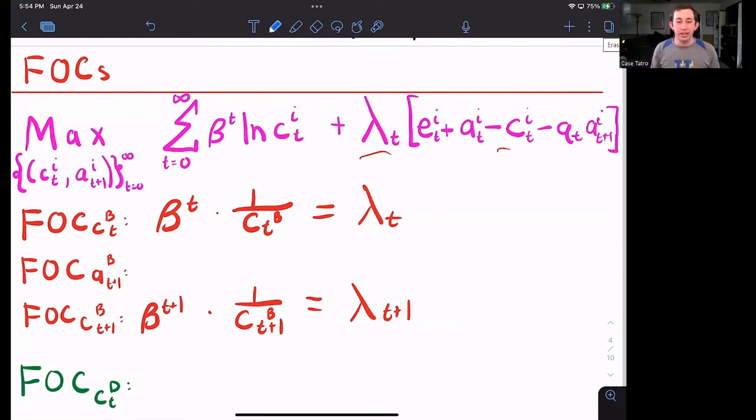Now let's talk about Bill's first order condition for AT plus one, because it's going to be a little different than anything we've seen before. So notice that this period, I have QT AT plus one, and I've still got the lambda. So this is going to be just negative lambda T QT.